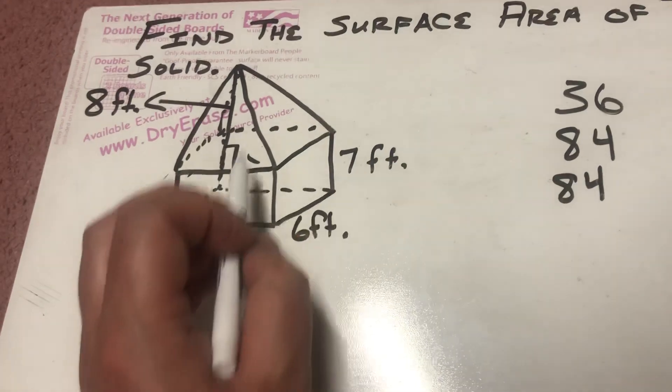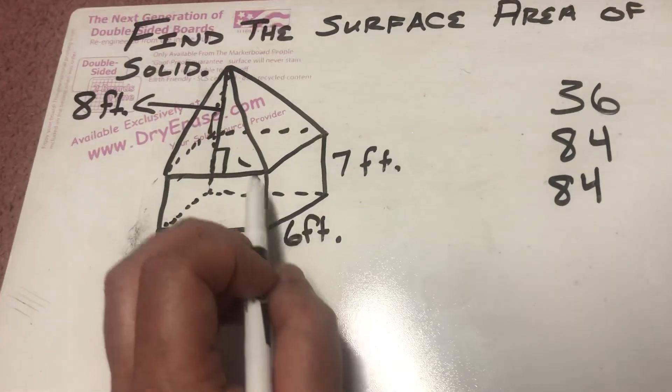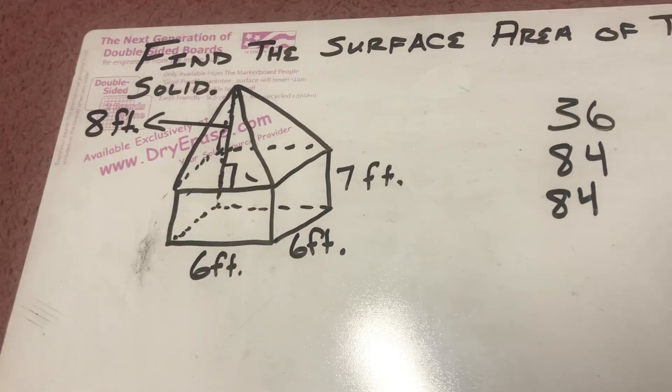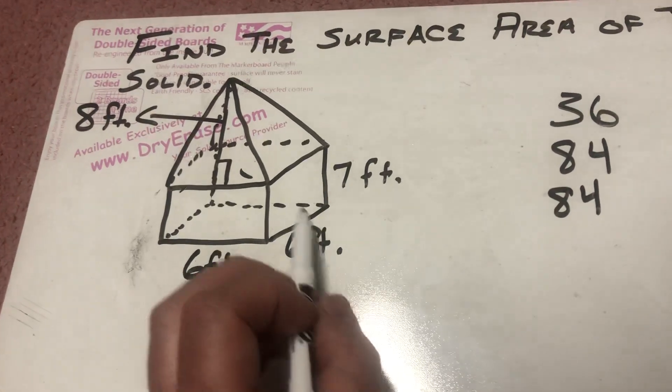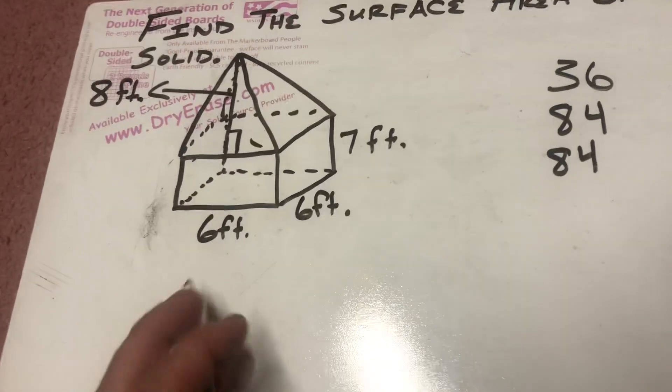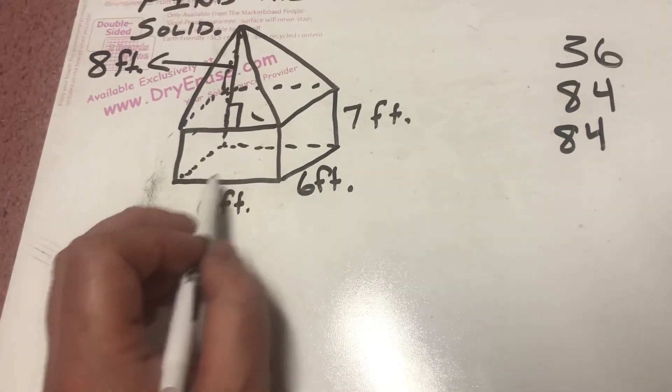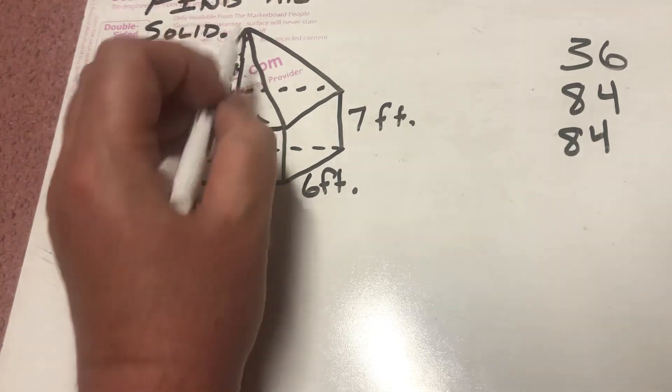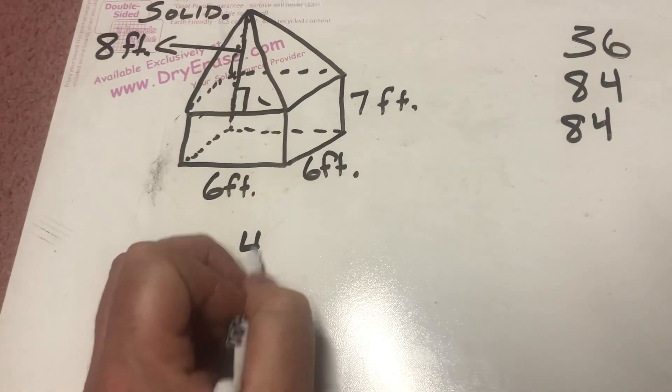And since it's a square pyramid, I know that there are 1, 2, 3, 4 triangular lateral faces. That's going to be base times height divided by 2, which looks like if this base is 6, that base is 6. The height is 8. 6 times 8 is 48.